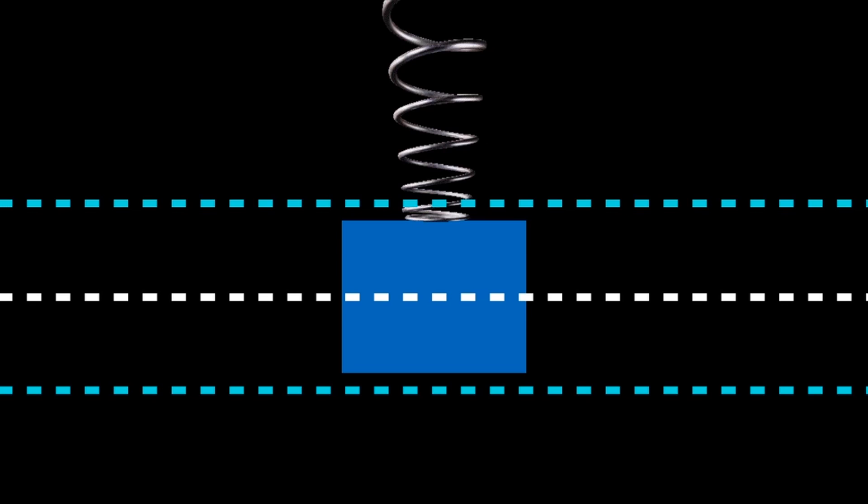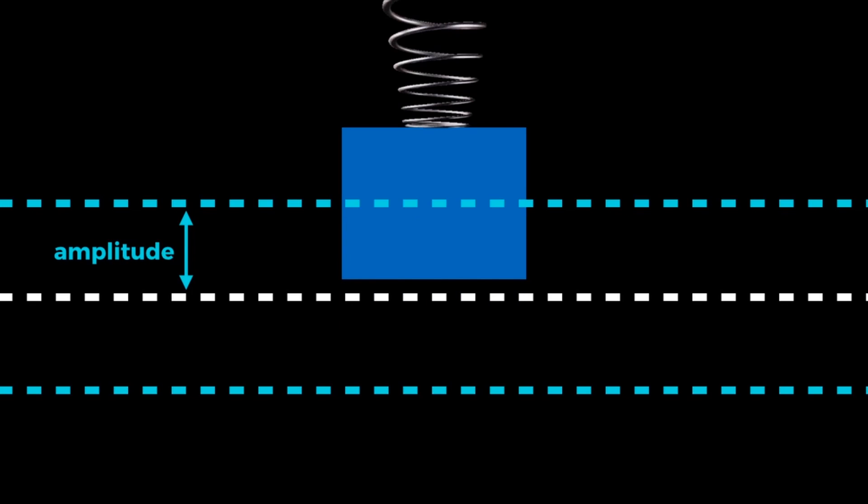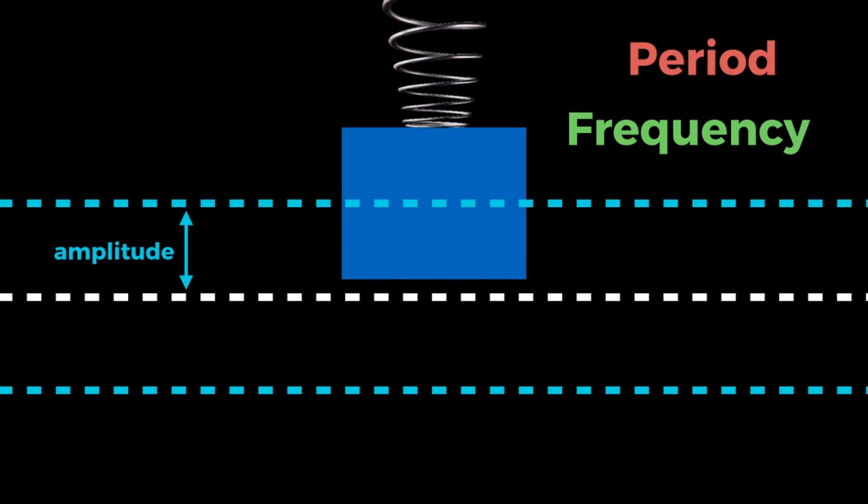The maximum distance that the object will ever travel from the equilibrium position is known as the amplitude. The period is the time it takes for the object to move up and down in one full cycle, and the frequency is the number of times it goes up and down in one second. The period is equal to one over the frequency, and the frequency is equal to one over the period.